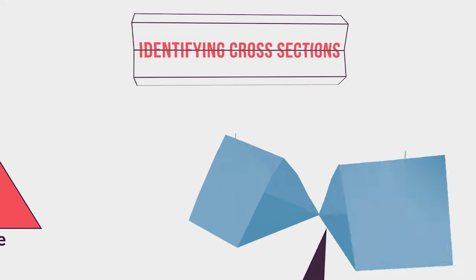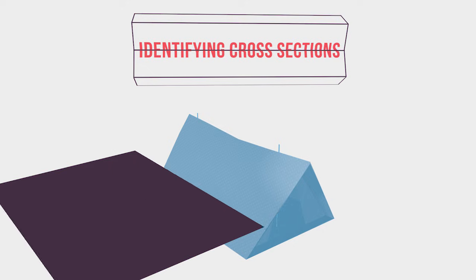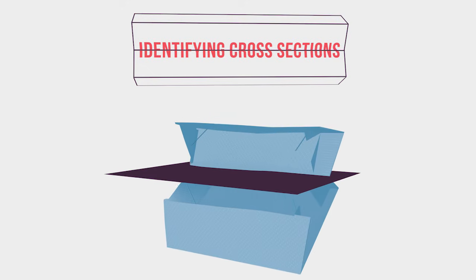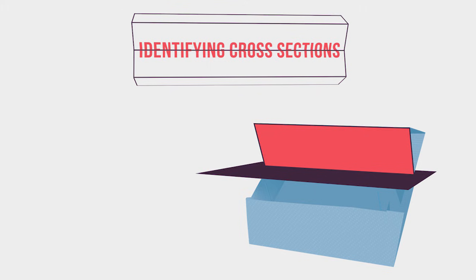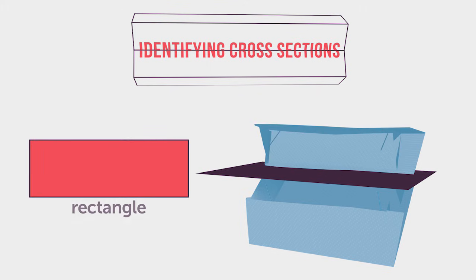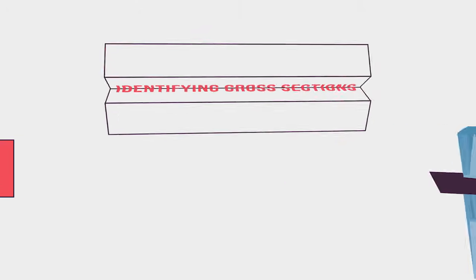What two-dimensional shape would be formed if you cut the tent horizontally or parallel to the base? With a horizontal cut, a rectangle would be formed. Again, with different cuts of the three-dimensional figure, you will form different two-dimensional shapes.